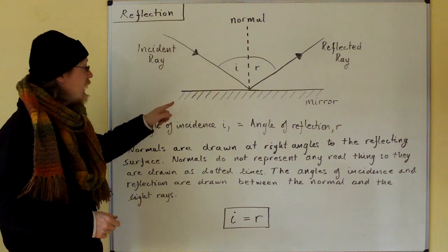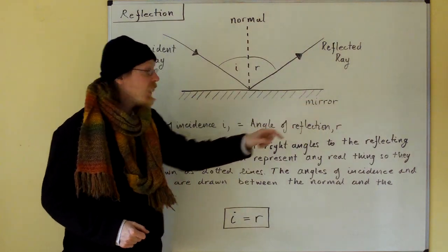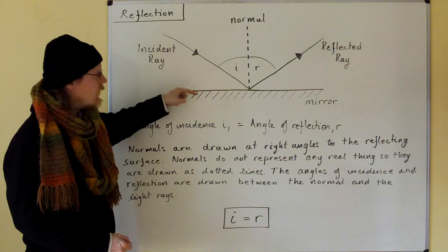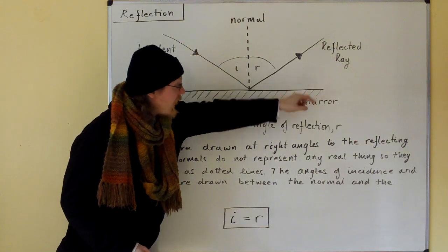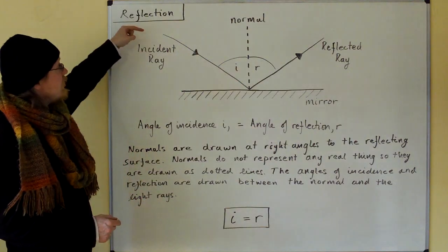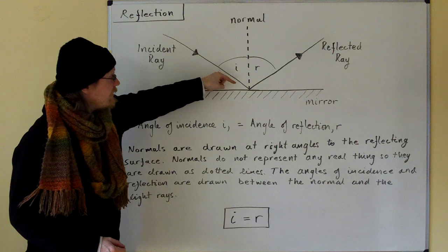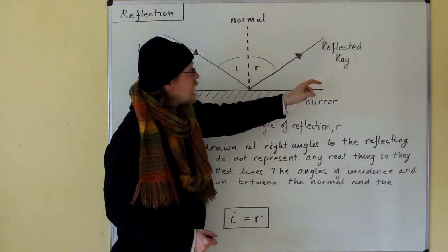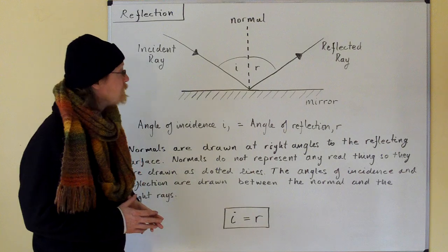Reflection. Here we have a mirror, and we draw the mirror as a straight line with hashing behind it. There's a light ray approaching this mirror called the incident ray, which gets reflected into a reflected ray.